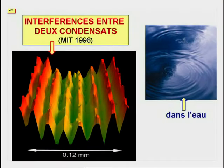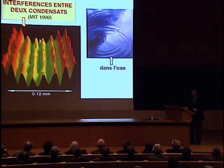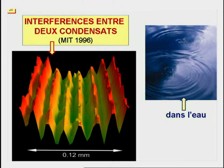En ce qui concerne la nature ondulatoire des condensats, les expériences sur le phénomène d'interférence sont sans doute les plus spectaculaires. On peut faire l'analogie avec les motifs d'interférence qu'on produit dans l'eau grâce à des ondes indépendantes qui se recouvrent au cours du temps. Dans les gaz ultrafroids, on produit d'abord deux condensats séparés. Après la coupure du confinement, les atomes s'étalent et les fonctions d'ondes des condensats se recouvrent en produisant des effets d'interférence bien visibles.